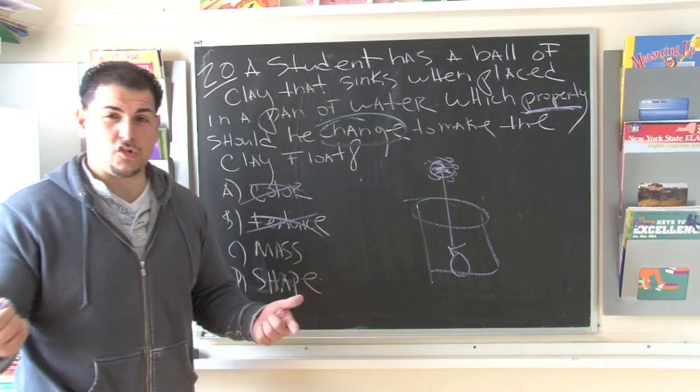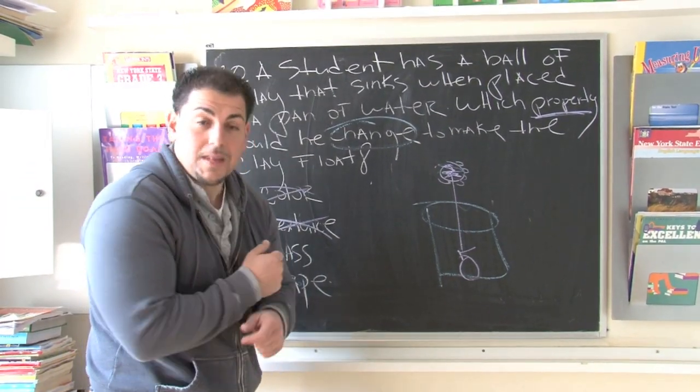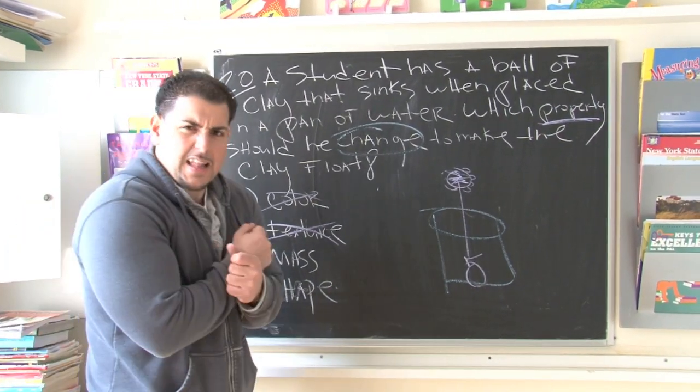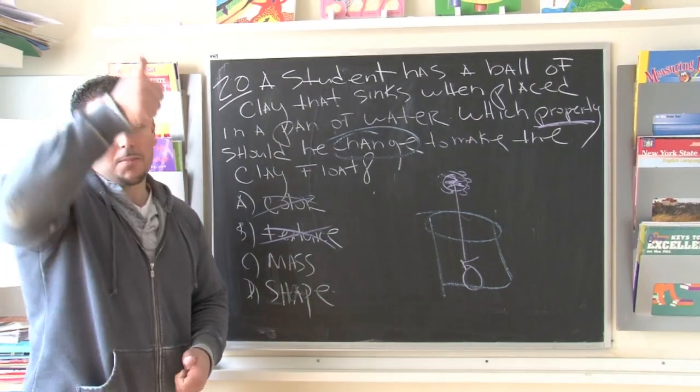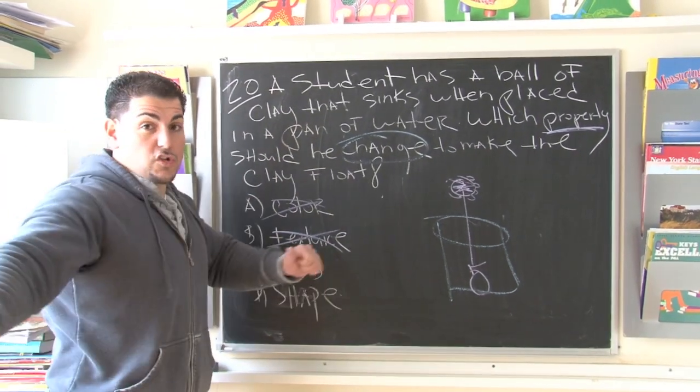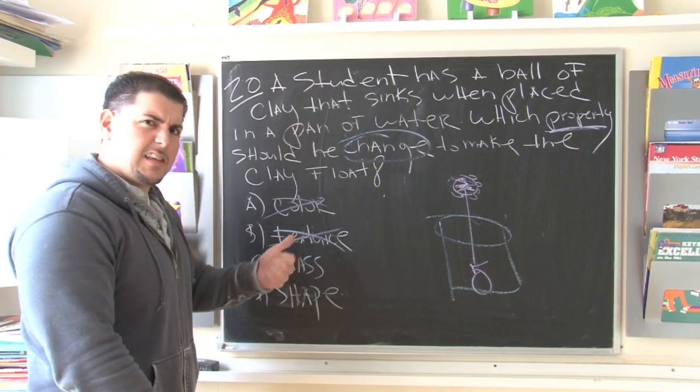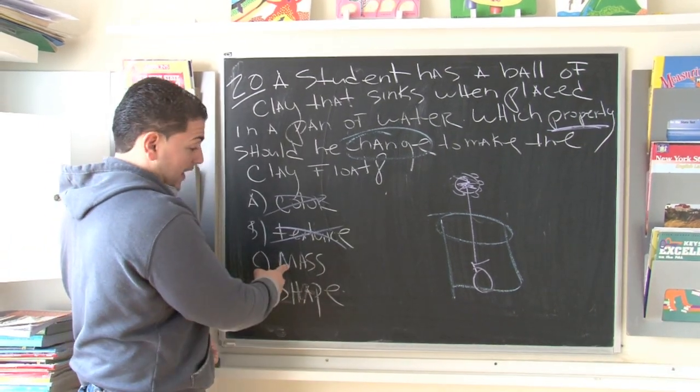And just think about when you jump in a pool and you do like a cannonball. It doesn't matter what kind of bathing suit you have on. If you stay in that cannonball position, you're going straight to the bottom. The only time you come back to the surface is when you change maybe your shape. Let's see if they have a word named shape. Next one is mass,